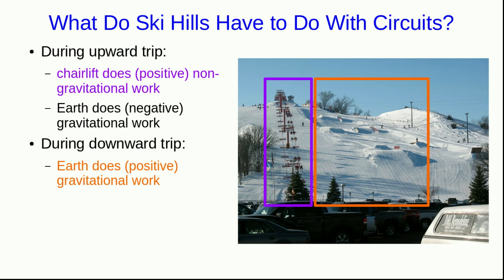Then during the downward trip, as they ski down the slope, the earth is doing positive gravitational work on the skiers. We can talk about the work per unit mass, and it would just be g∆h, right? The work to move a skier up from the bottom to the top would be mg∆h, and so the work per unit mass is just g∆h.